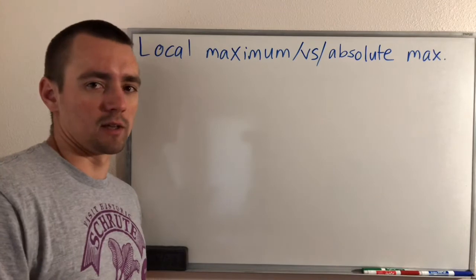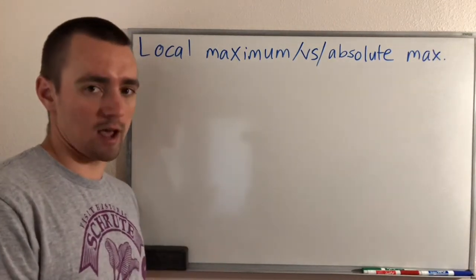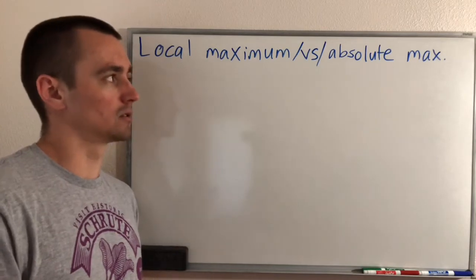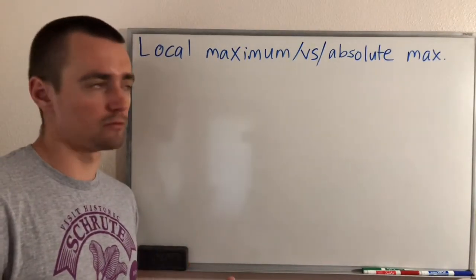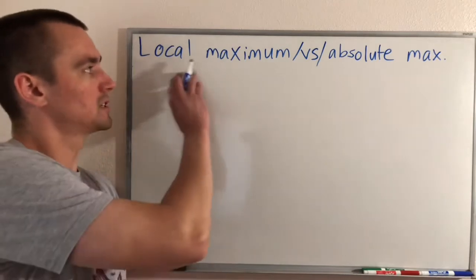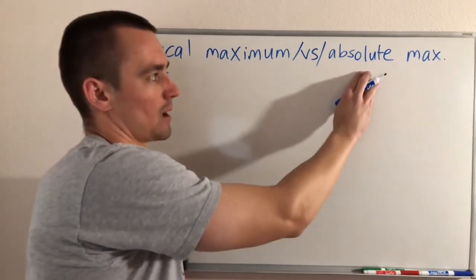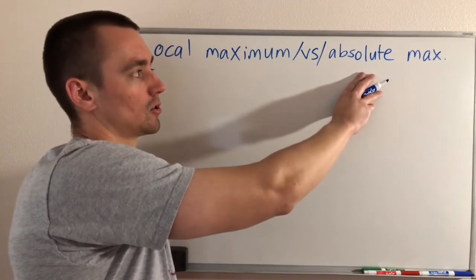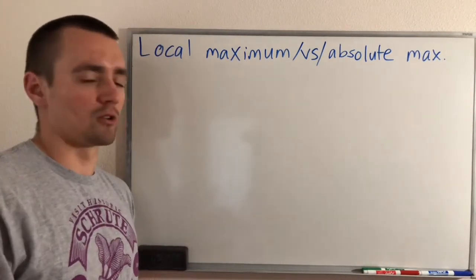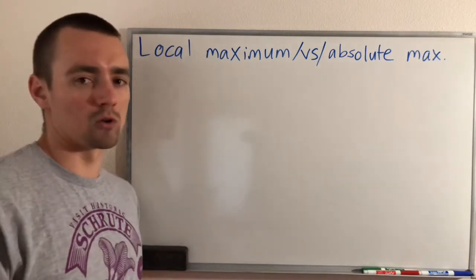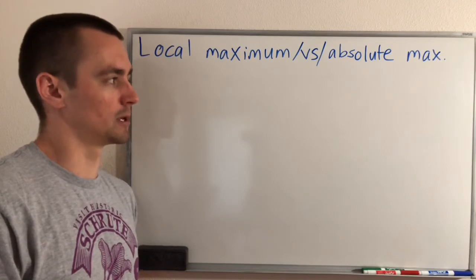Today I just want to kick that off by talking about the difference between a local versus an absolute maximum or minimum. These are sometimes also called relative maximum or minimum instead of local, and instead of absolute you may see it called global maximums or minimums. Those are all synonyms — global and absolute are the same, local and relative are the same.